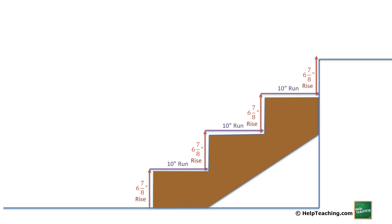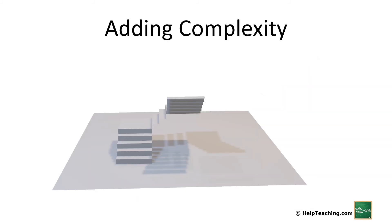If we get more complex, such as a case like this where we don't have the necessary straight run or we don't want it for architectural reasons, in this case we have two landings, three sets of stairs, and you can use the same methods.